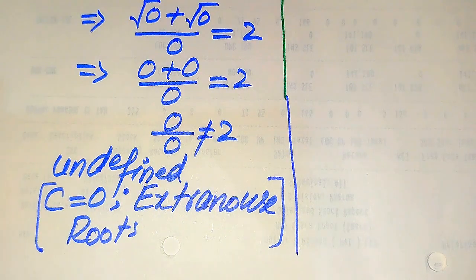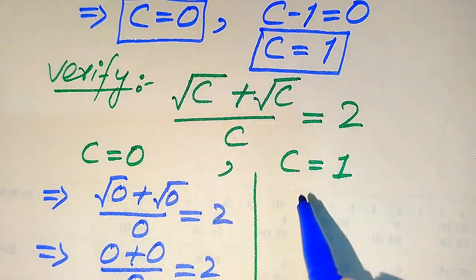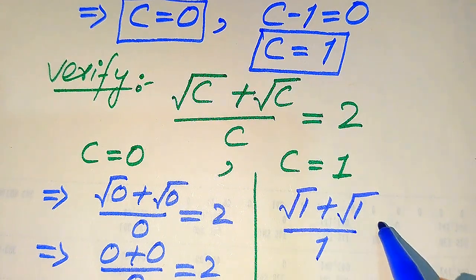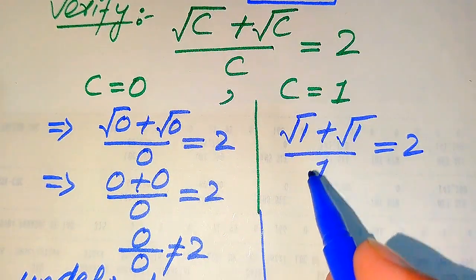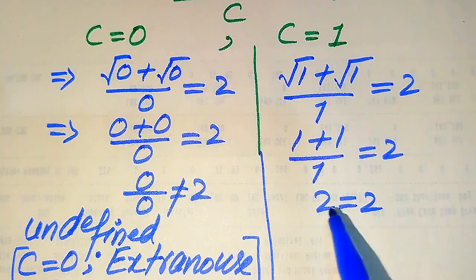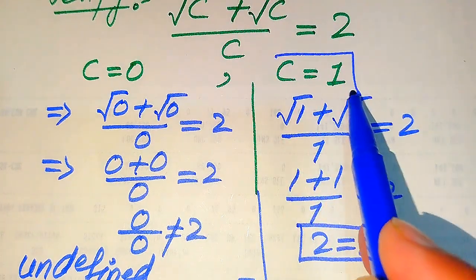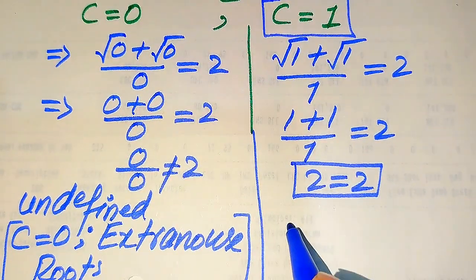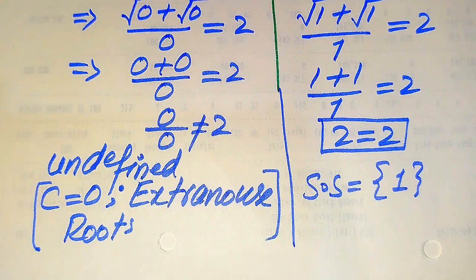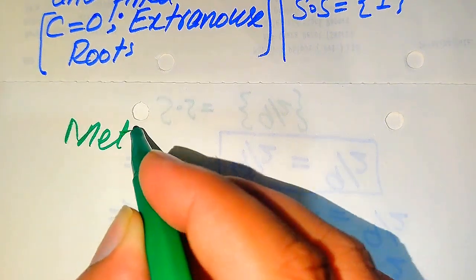Now we verify C equals 1. Substituting into the left-hand side: square root of 1 plus square root of 1 divided by 1 equals 2. This gives 1 plus 1 over 1, which is 1 plus 1 equals 2, so 2 equals 2. This confirms that C equals 1 satisfies the equation. Therefore, C equals 1 is the solution, and the solution set is {1}. C equals 0 is the extraneous root.